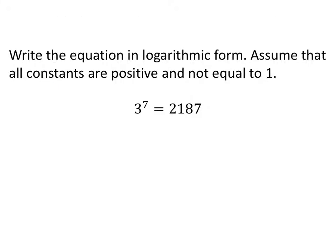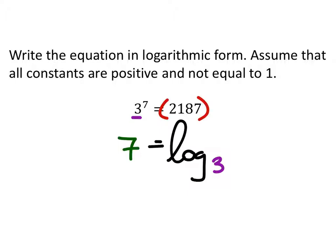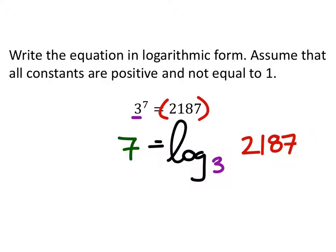Write the equation in logarithmic form - assume that all constants are positive, not equal to 1. We're going to make this equal to some kind of log. The base for this is 3, the exponent is 7, and then it would be the log of whatever the exponent equals - 2187. If you want to put parentheses on it that's fine, but it's not required. Just make sure that 3 is not part of whatever that log is of - if you put the 3 right there, it looks different, so don't do that.